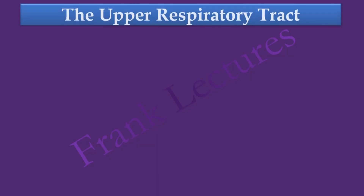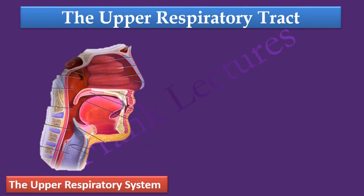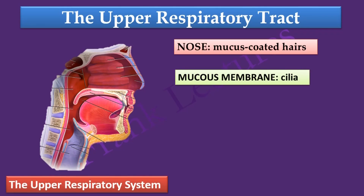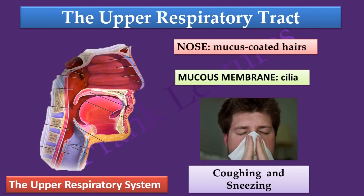Looking at the upper respiratory tract, the nose contains mucus-coated hairs which trap and filter microbes from the air during inhalation. The mucus of the nose also contains lysozyme, which is bactericidal in action. The mucous membrane of the upper respiratory tract also contains cilia — microscopic hair-like projections — which propel inhaled and trapped dust and microbes towards the throat. Sneezing and coughing are reflexes which clear the respiratory system.